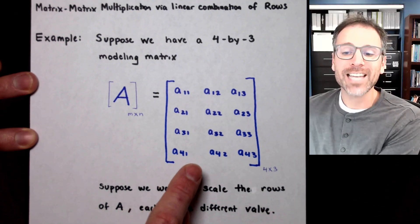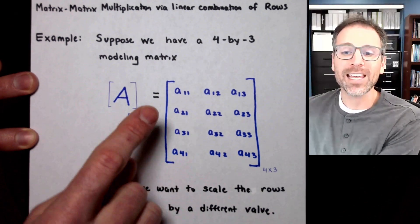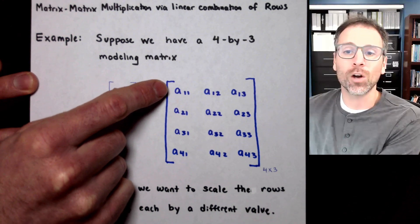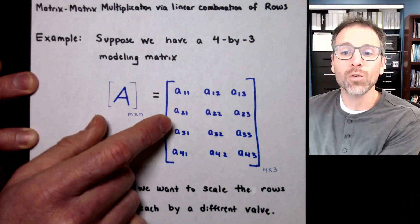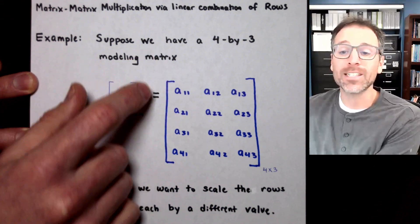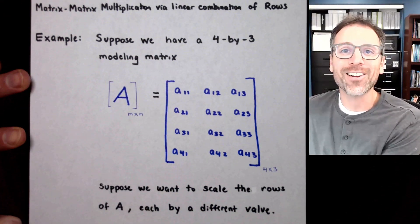Let's suppose that we want to scale the rows of A each by a different value. So we want to scale row one by some value, row two by some value, row three and row four. Could be the same or could be different. Let's take a look at how to do that.